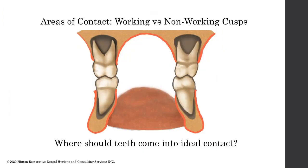That very thin supercrestal enamel at the CEJ can absorb up to 750 psi, which explains why we get lesions in that area. If a patient is grinding or clenching, all those numbers can increase two to four times. Studies investigating occlusal discrepancies and progression of periodontitis found that teeth with occlusal discrepancies had significantly deeper initial probing depths, more mobility, and a poor prognosis compared to teeth without occlusal discrepancies.